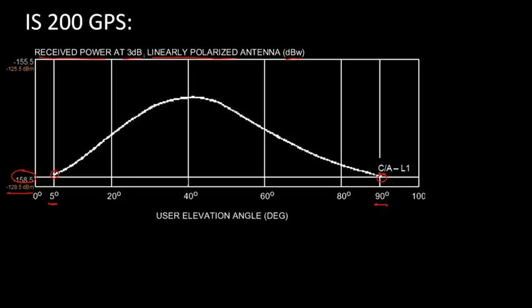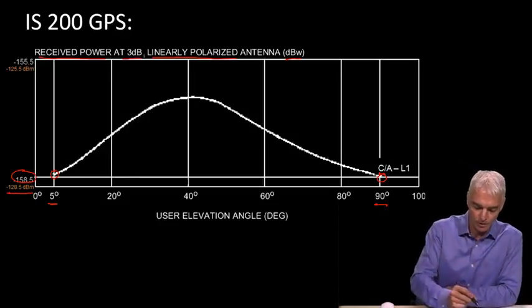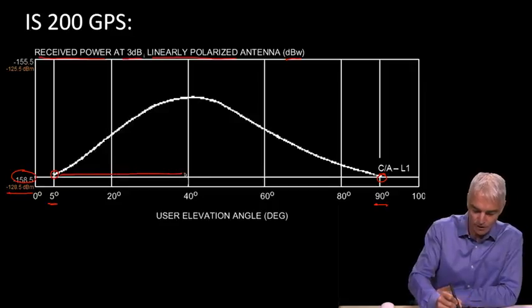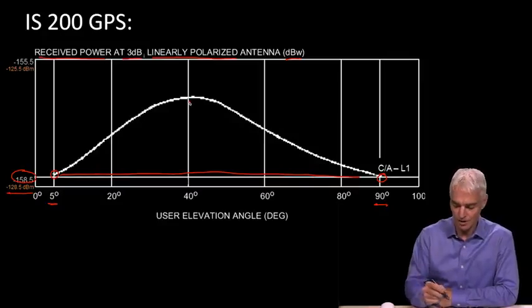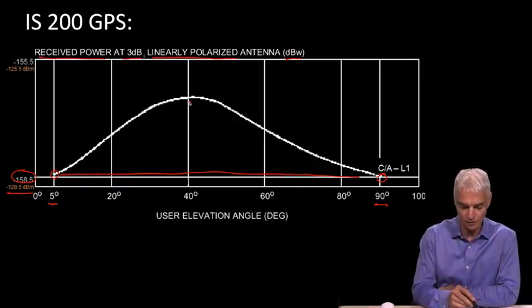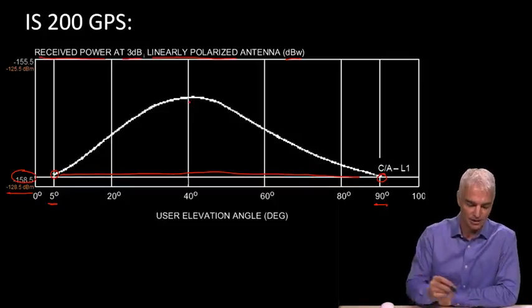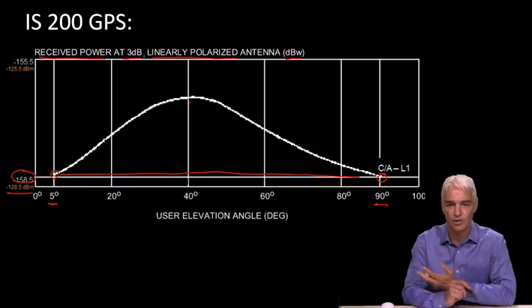It's not quite flat all the way across just because you can only build an antenna with a certain kind of gain pattern. And so it's not possible or it's not convenient to be able to get this signal strength perfectly flat all the way across. It goes slightly up at an elevation of 40 degrees.